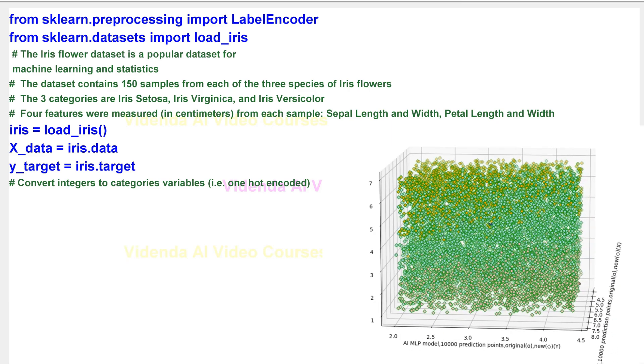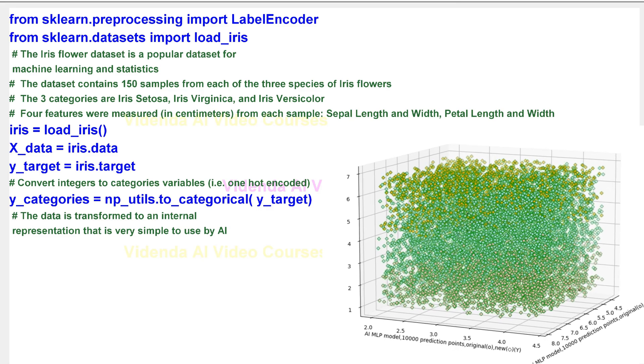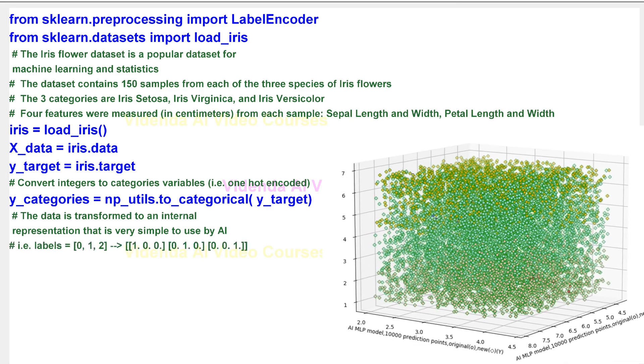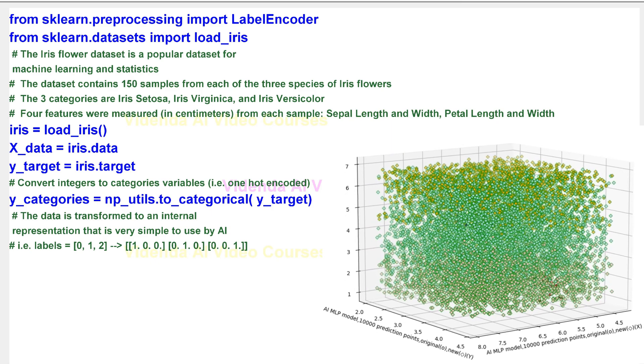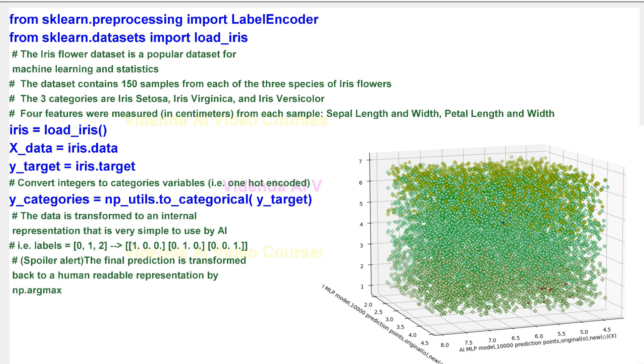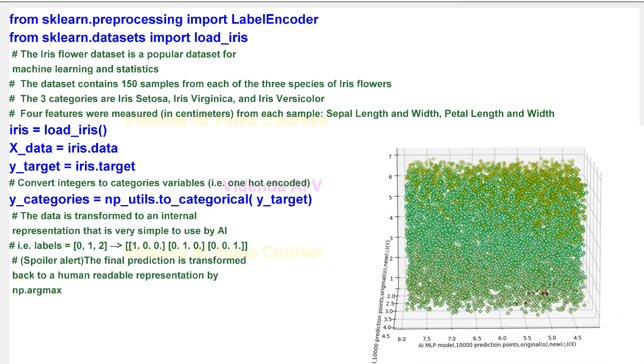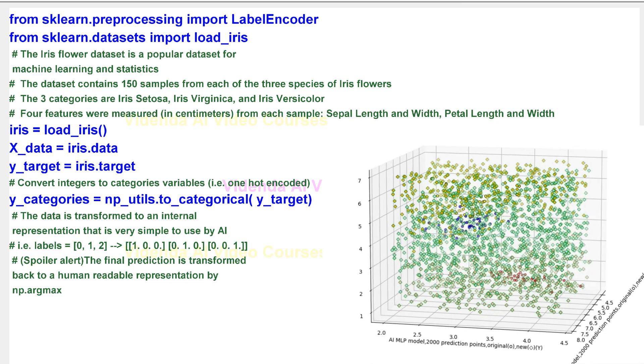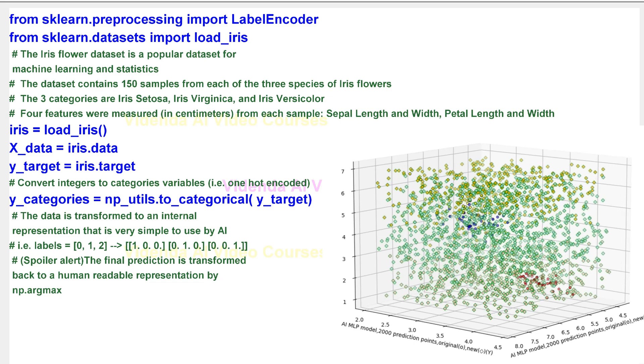Convert integers to categories variables, i.e. one hot encoded. The data is transformed to an internal representation that is very simple to use by AI. For example, labels equals 0, 1, 2 becomes 1, 0, 0 for class 0; 0, 1, 0 for class 1; and 0, 0, 1 for class 2.